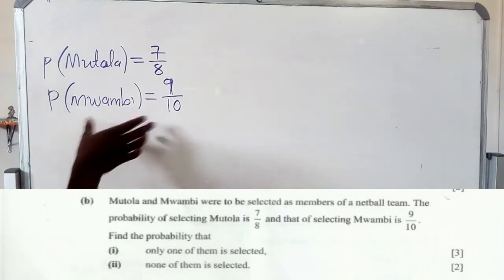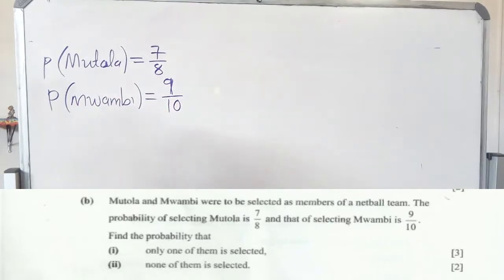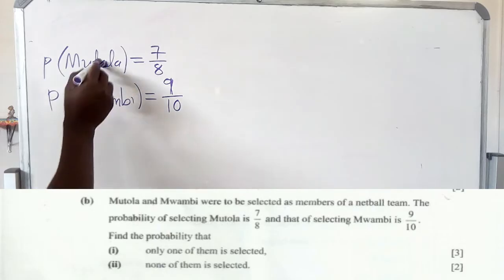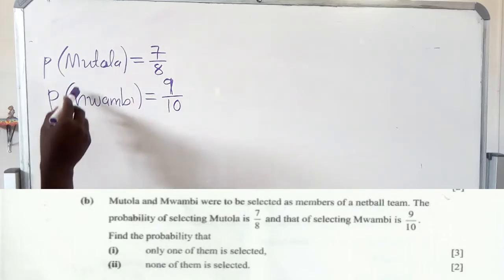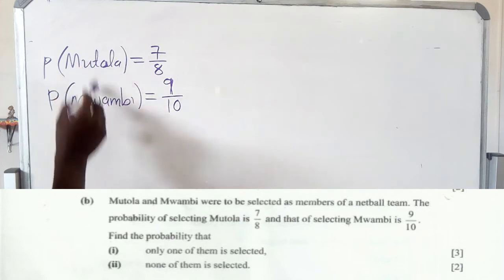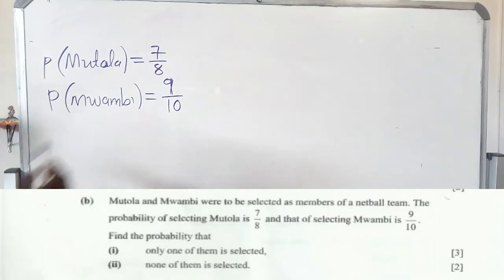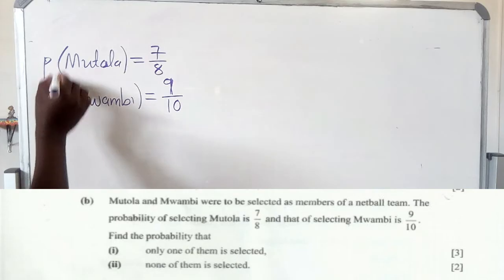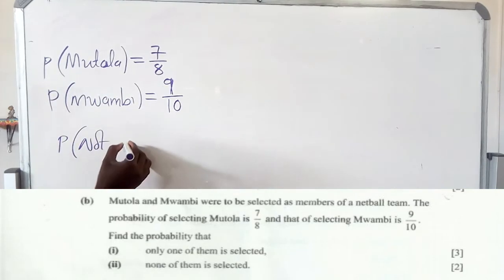Since they have given us their probabilities — the probability of selecting one is 7/8 and the other is 9/10 — in order to find the probability of selecting only one person between the two of them, we need to find the probability of not selecting each of them. That means the probability of not selecting Muthola, as well as the probability of not selecting Mwami.